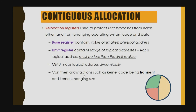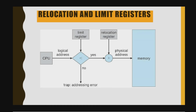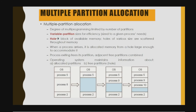The base register contains the value of the smallest physical address. The limit register contains the range of logical addresses, and each logical address must be less than the limit register. The MMU maps the logical address dynamically to the physical address. The CPU provides the logical address, checks it against the limit register, then the relocation register maps it to a physical address going to memory; otherwise an addressing error is raised.